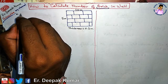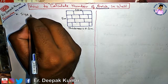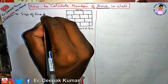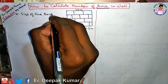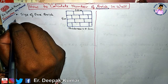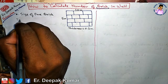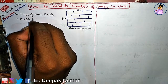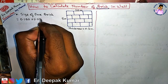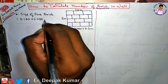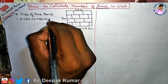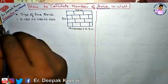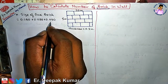We know that the size of one brick is equal to 0.190 × 0.090 × 0.090 — this is in meters: length, breadth, and height.